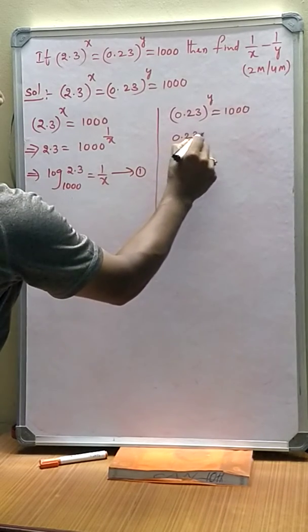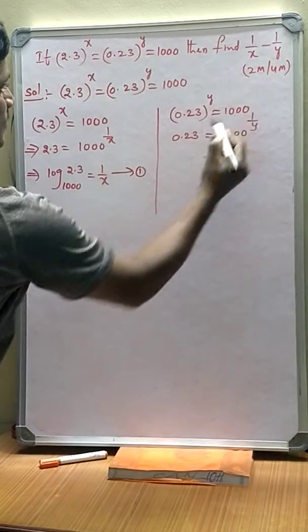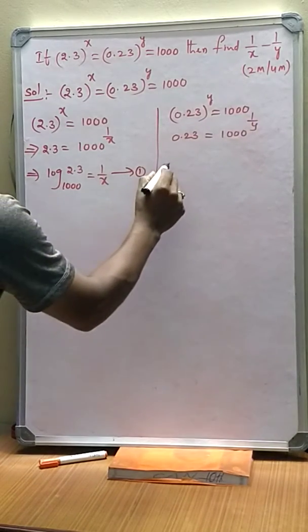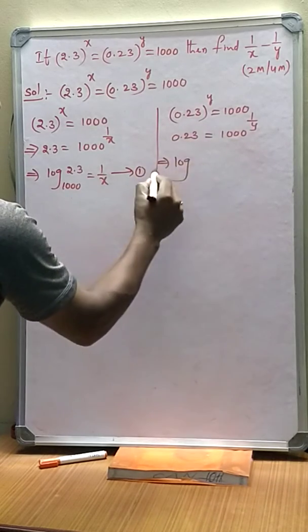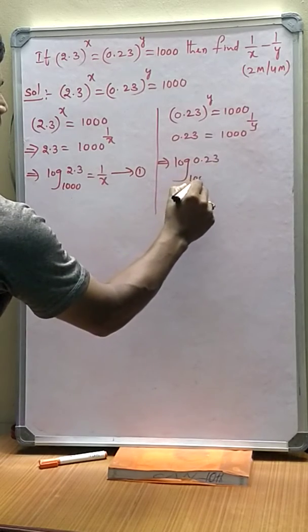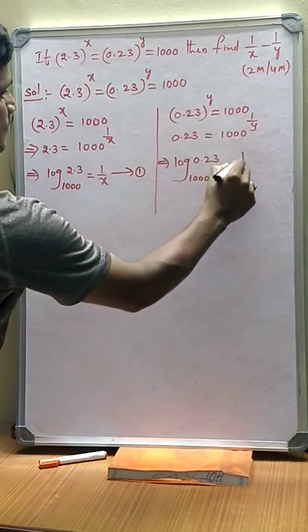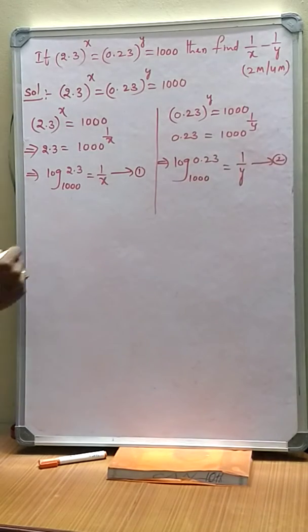Then 0.23 equals 1000 power 1 by y. Write down this exponential form into logarithmic form: log 0.23 base 1000 equals 1 by y. This is equation 2.